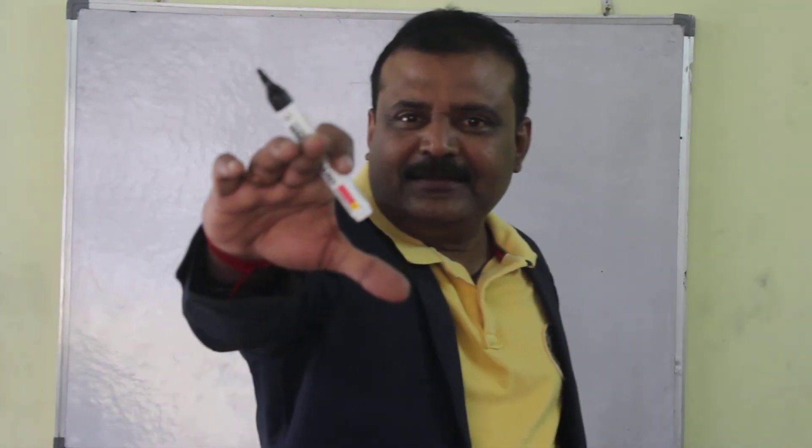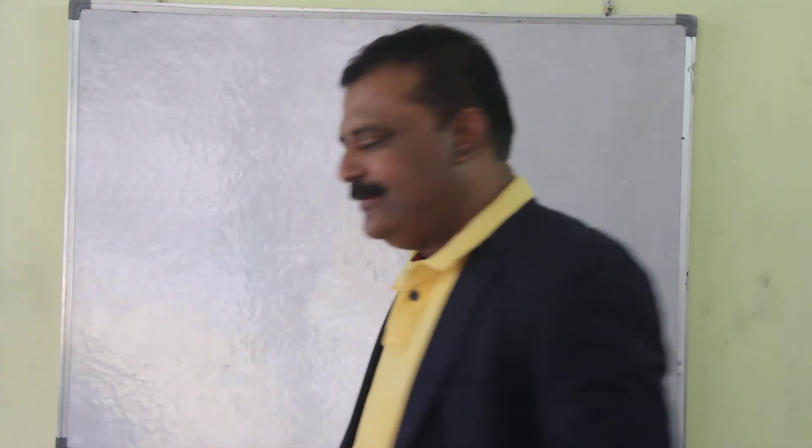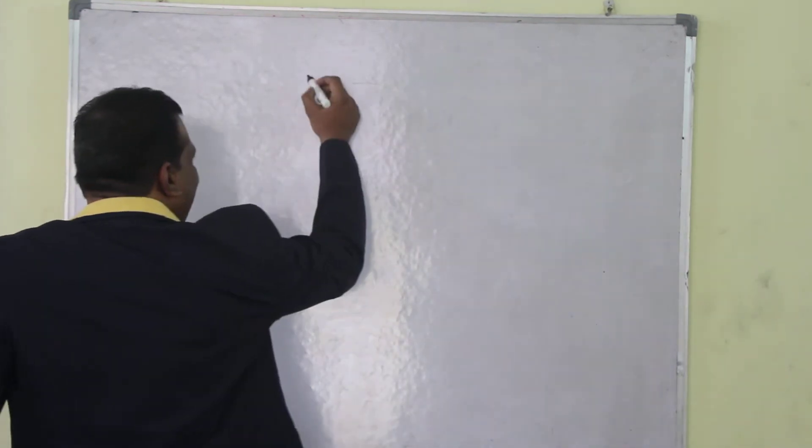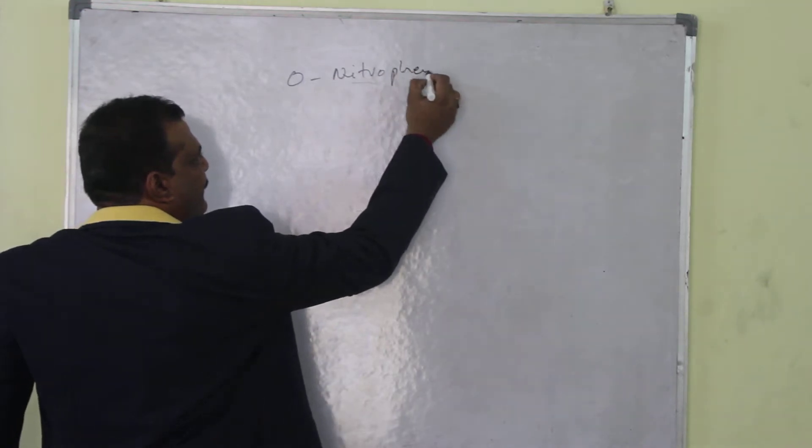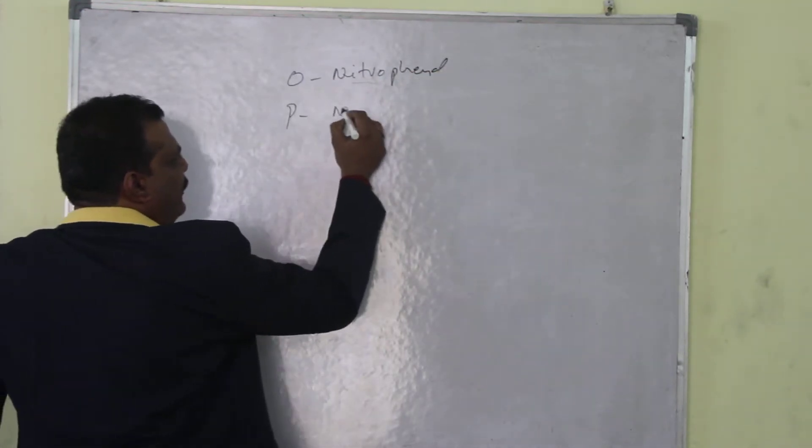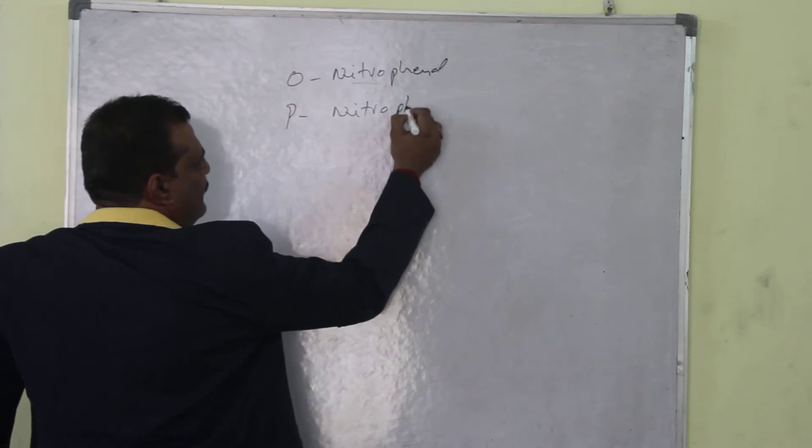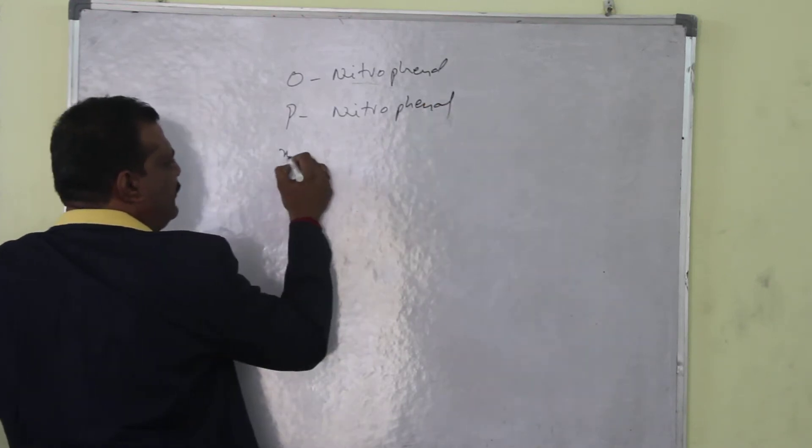T20 chemistry T20. How to remember pKa values of phenols and ethanol: ortho nitrophenol, para nitrophenol, meta nitrophenol.